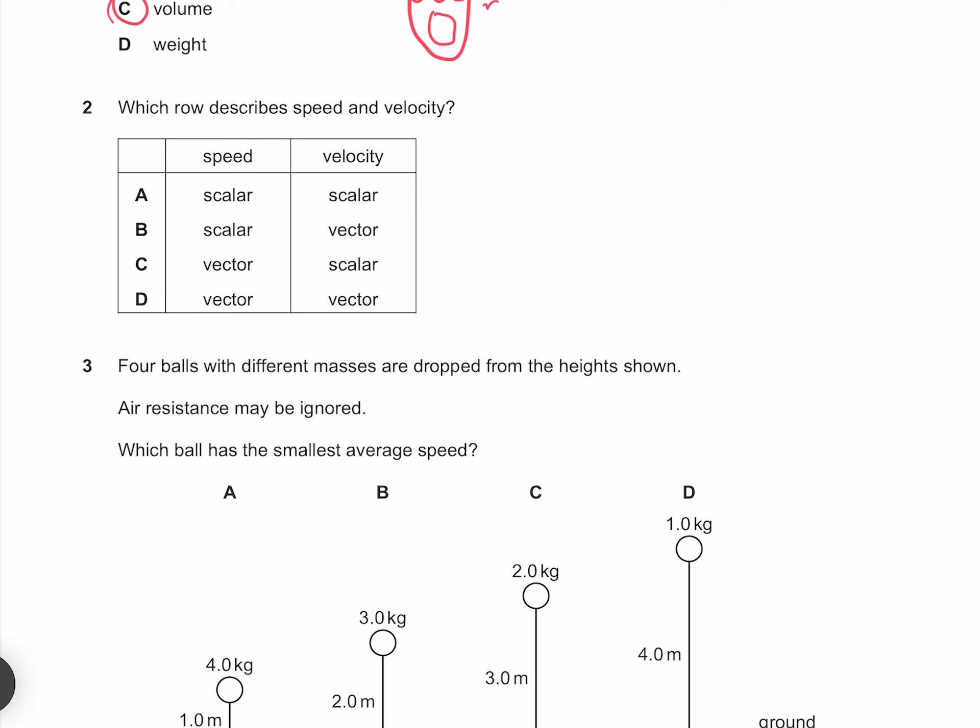Which row describes speed and velocity? Speed is a scalar and velocity is a vector, so our answer is B.